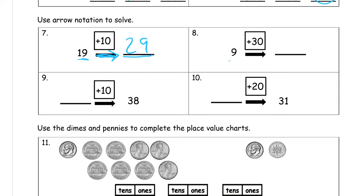So we're going to start here with 9 and we add 30 to it. We're going to get 39.